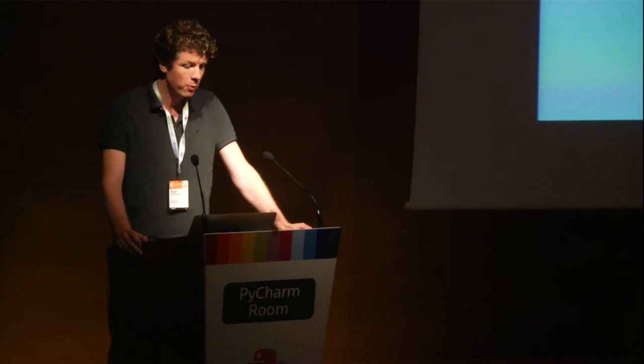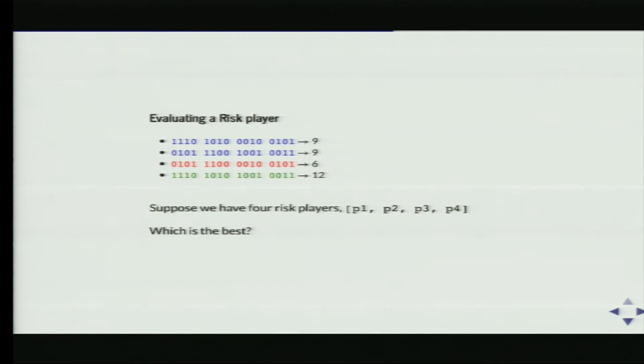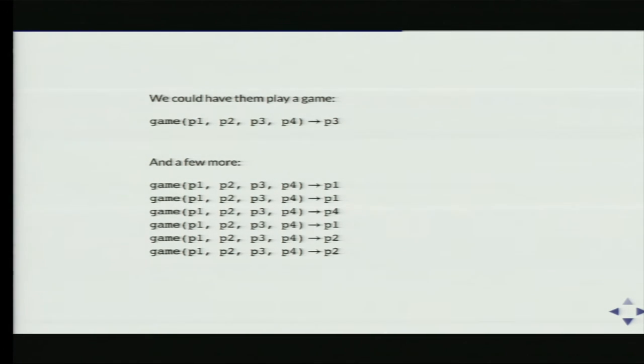Now, how would we implement a genetic algorithm for RISK? There's one problem: when evaluating a RISK player, we don't have a simple score function. If we have four RISK players, we can have them play a game, and player 3 wins — but is player 3 the best? Not necessarily, because there's an element of luck. We can play more games and see which player wins most often, but this takes time. We could play hundreds of games until we're satisfied with the precision we've achieved.